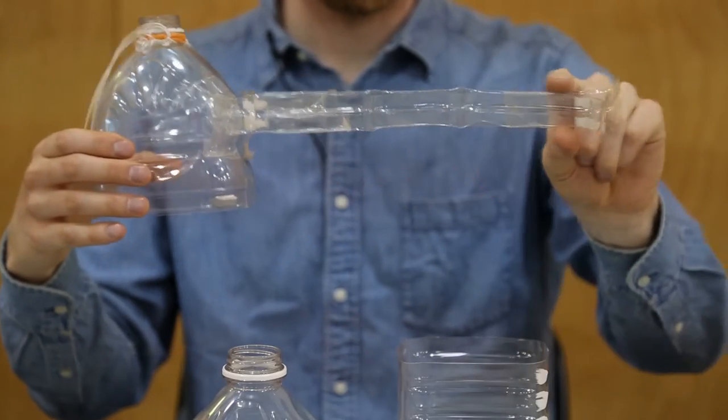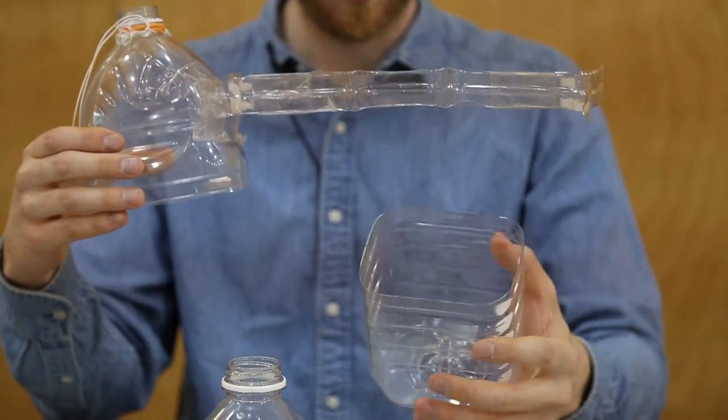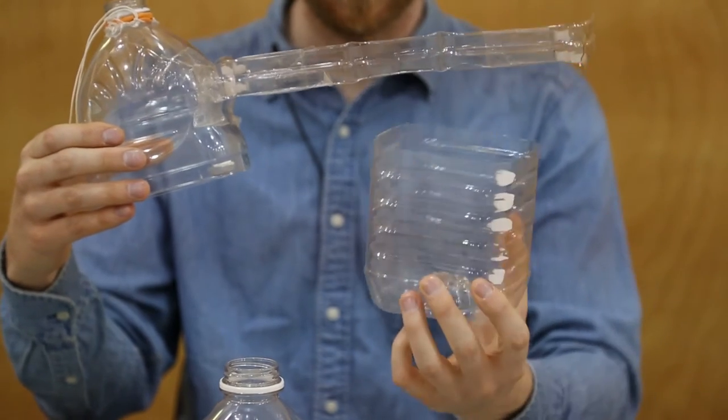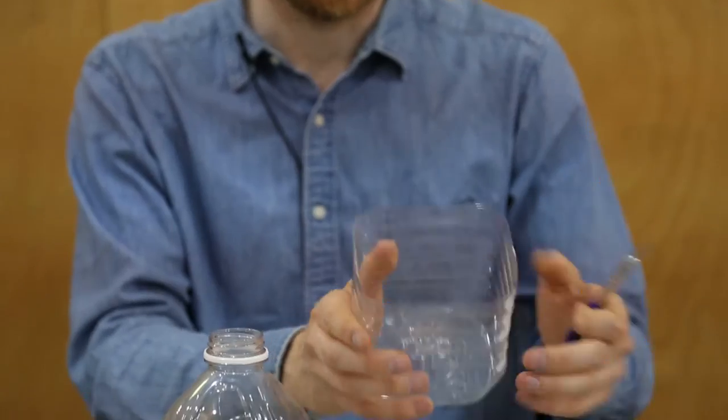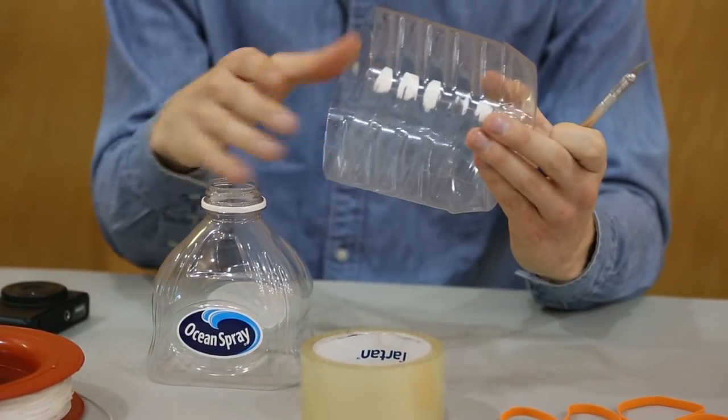To make this stabilizer fin, I'm going to cut two sections from the lower part of the juice bottle and just use the existing corrugations as guides.